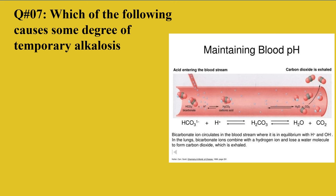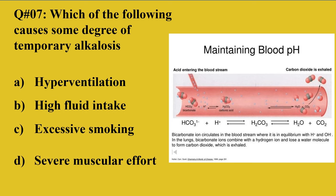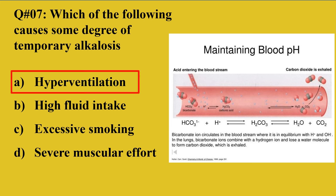Question 7: Which of the following causes some degree of temporary alkalosis? A: Hyperventilation, B: High fluid intake, C: Excessive smoking, D: Severe muscular effort. The right option is hyperventilation. Hyperventilation causes excessive elimination of carbon dioxide through exhalation, disturbing the bicarbonate/carbonic acid equation. Carbon dioxide is formed from bicarbonate ion and hydrogen ion to form carbonic acid via carbonic anhydrase, then dissociates into water and CO2. When excess CO2 is eliminated, the remaining bicarbonate ions cause temporary alkalosis.